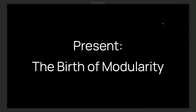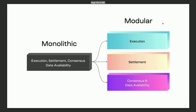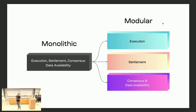That brings me to the second chapter: the birth of modularity. In 2019, Mustafa Al-Bassam, one of the co-founders of Celestia, published the Lazy Ledger white paper. In my opinion, this is another fundamental breakthrough in blockchain architecture. He proposed a new modular architecture where, instead of doing all functions within one monolithic protocol, you split those functions into discrete separate layers that focus on specific functions, then mix and match between them to build a modular stack. By doing this, you end up solving those two fundamental problems: scalability and flexibility.